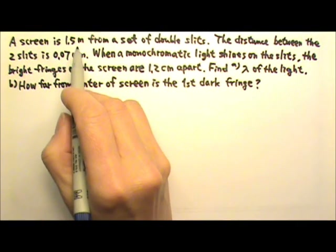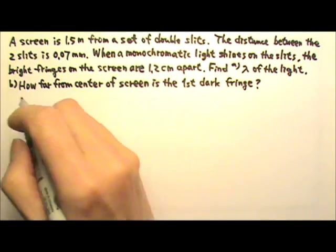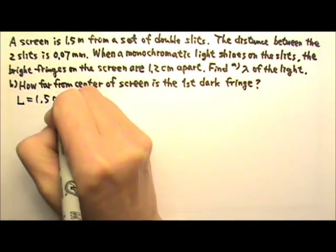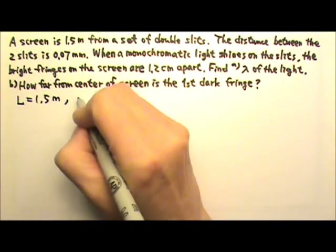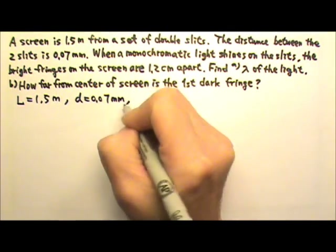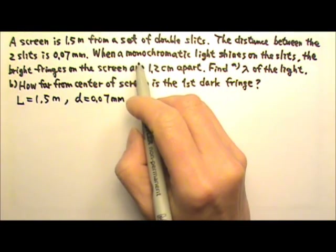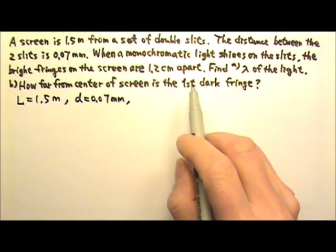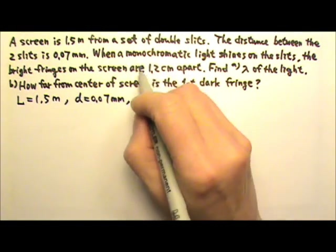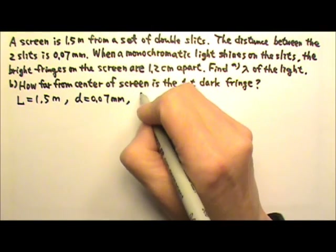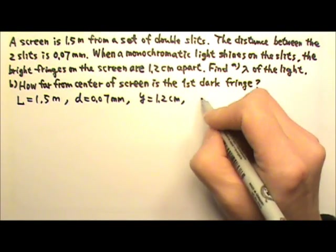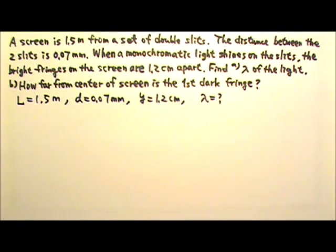The screen is 1.5 meters from the double slits, so L is 1.5 meters. The distance between the two slits is D, 0.07 millimeters. The bright fringes on the screen are 1.2 centimeters apart — the distance on the screen is Y, 1.2 centimeters. We need to find the wavelength of the light.